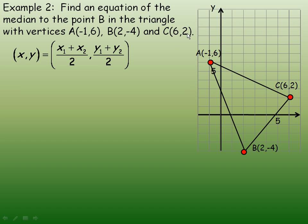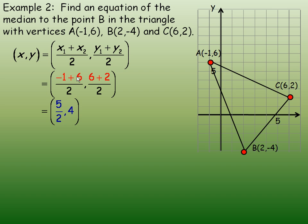The coordinates of A and C are negative 1, 6 and 6, 2. So negative 1 plus 6 divided by 2 for the x, and then 6 and 2 are the y-coordinates, so we add those and divide by 2. Negative 1 and 6 add to 5, so that's 5 halves. And 6 and 2 add to 8; 8 divided by 2 is 4. I'll leave the x-coordinate as a fraction. So our midpoint is the point 5/2, 4.